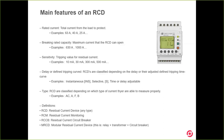You probably know other sensitivities such as 300 milliamps and 500 milliamps. 300 milliamps is very common to protect any kind of loads, and higher values than 300 milliamps are usually used to protect sub-cabinets or main cabinets in the mains of the installation.